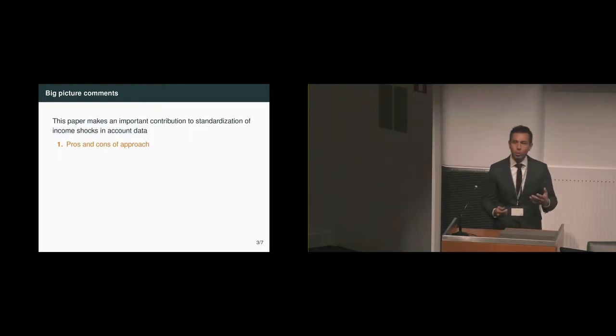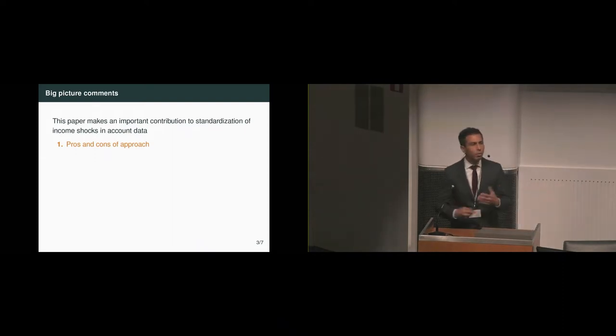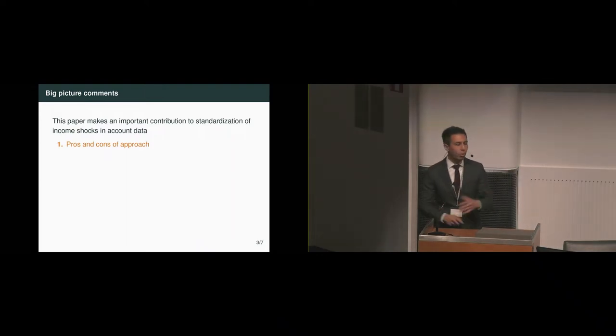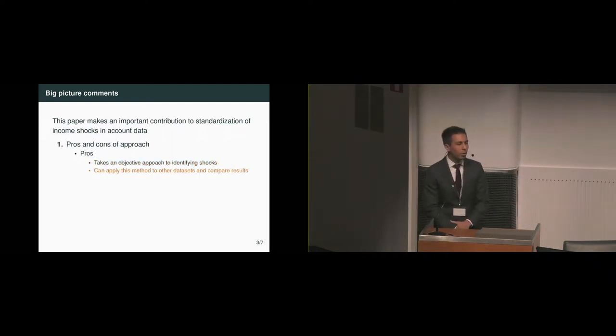As I mentioned, I'll just make a couple big picture comments. I think this paper makes an important contribution to the standardization of income shocks in account data. There are a lot of other papers that use account data, but typically they look at specific episodes, and so it's kind of hard to compare them across different papers. I think the main pro is that this approach takes an objective view to identifying shocks, and once you do that, you can apply this method to other datasets of account data and compare the results.